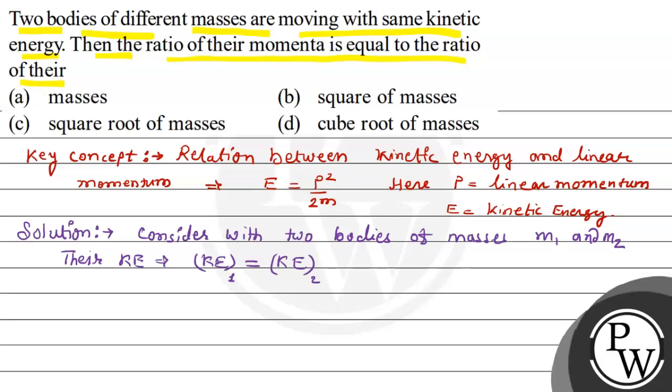So we need to find the ratio of momenta. We have the relation P square upon 2m. So first of all, P1 square upon 2m1 is equals to P2 square upon 2m2. The 2s cancel. Now what is the ratio of their momenta? P1 square upon P2 square equals to m1 upon m2.